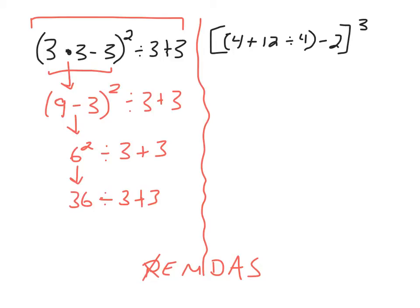I've solved my exponent. Are there any multiplications and divisions? Yes, there's a division — 36 divided by 3 is 12, plus 3. So I'm done with my multiplications and divisions. My last step is additions and subtractions, and there's only an addition, so my answer is 15.